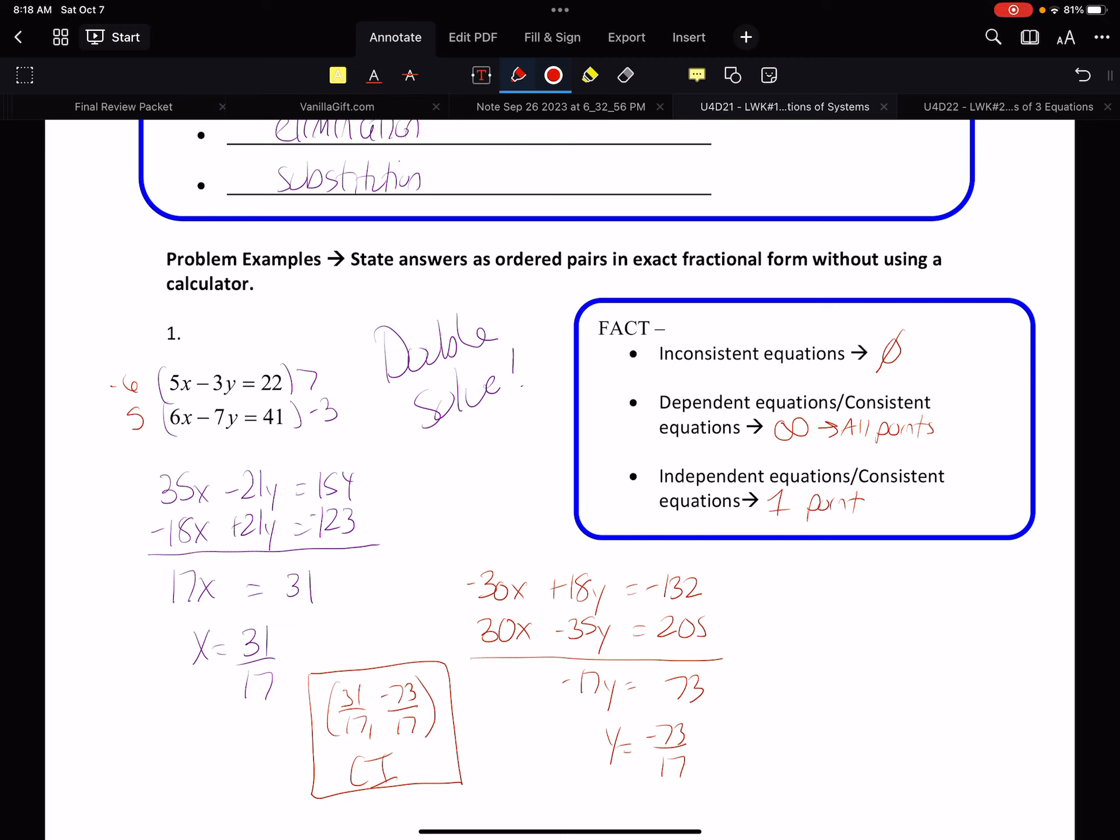Now, when we solve our systems, you know, the fact that we got 17x equals 31, that was telling me right there that we were getting a one point answer in this scenario. Sometimes you don't get the one point answer. Sometimes you have your system set up. You have your system. That means it's either going to be a CD or an I. It's either going to be inconsistent or to be a consistent dependent.